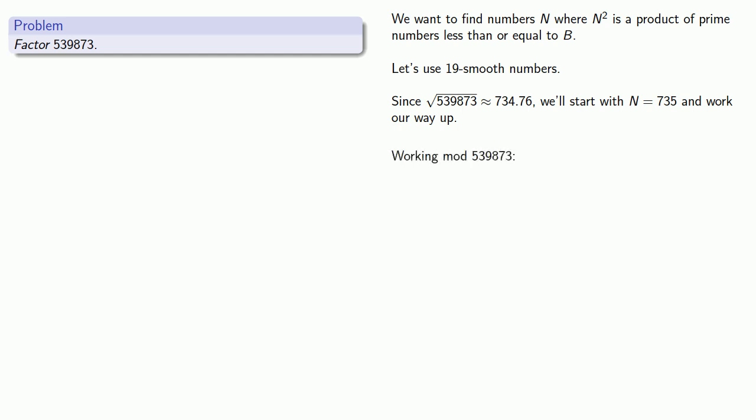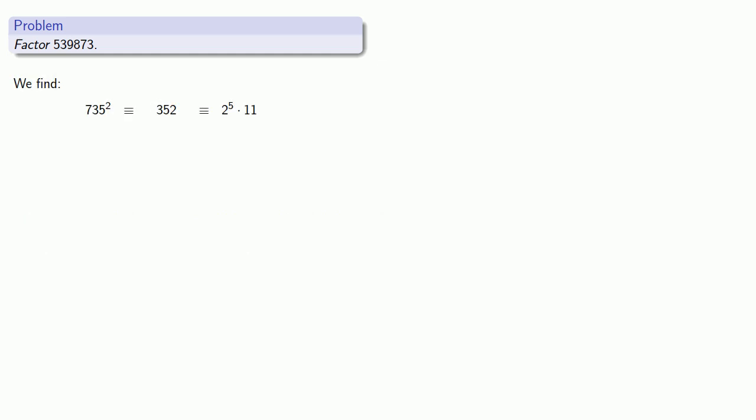Working mod 539873, we find 735 squared congruent to 352, which factors nicely. Maybe we'll get lucky and find our necessary factors immediately. Don't count on it.